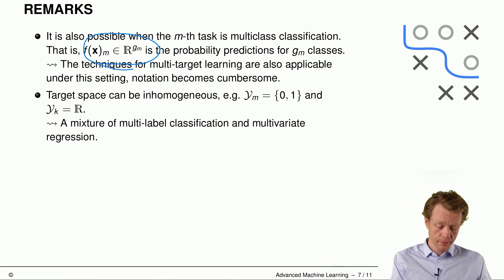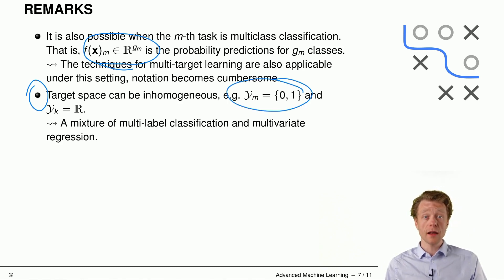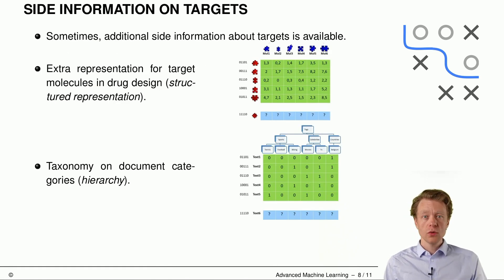The target space, second point here, may be inhomogeneous. So we may have, for example, a binary target in row or in column M and a real value target in column K. That's totally allowed. And then we have a mixture of multi-label classification and multivariate regression.